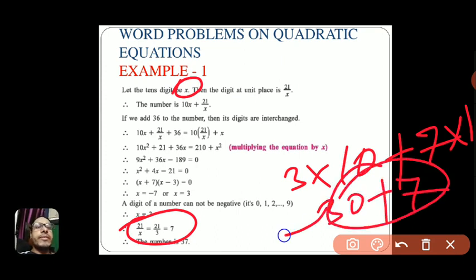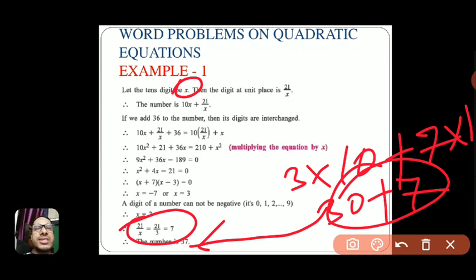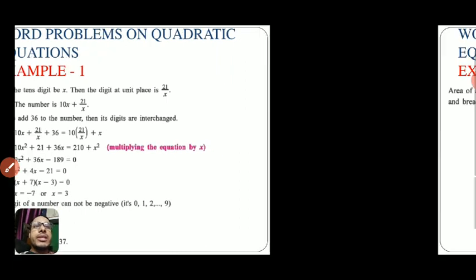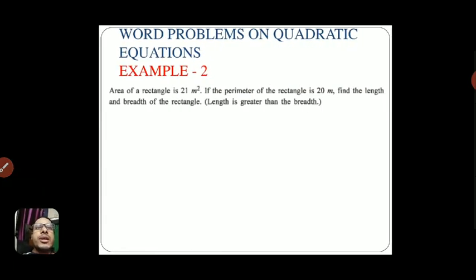I hope you understood this question. For such types of word problems, make sure you understand each line and extract equations from the sentences. Now moving to example number two: area of a rectangle is 21 square metres and the perimeter of the rectangle is 20 metres. Find the length and breadth.